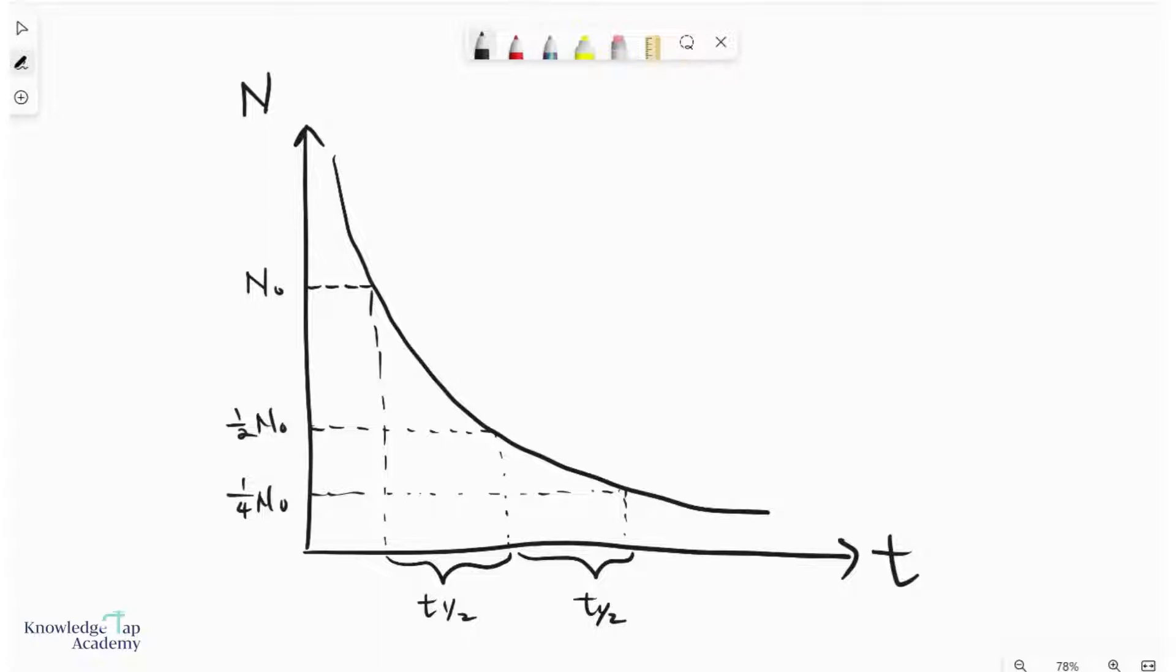All radioactive decay processes have constant half-lives. And so what a half-life is, it's simply the time required for the number of undecayed nuclei to half.